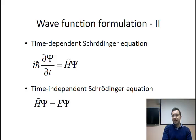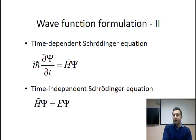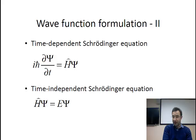In the Schrödinger formulation there are two main equations that describe the dynamics. The first is the time-dependent Schrödinger equation — this is an initial value problem where you define a wave function describing the initial conditions of your experimental setting at time t equals zero, and this equation tells you how the wave function will evolve in time.